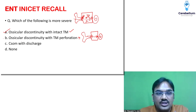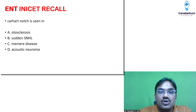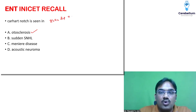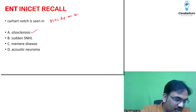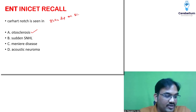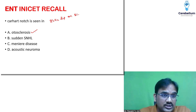Carhartt's notch is seen in otosclerosis — very straightforward, very easy question. Carhartt's notch is nothing but a dip at the 2 kHz area on the bone conduction curve. The stapes fixation question is coming up as well — that is another question. But Carhartt's notch is seen in otosclerosis, straightforward.